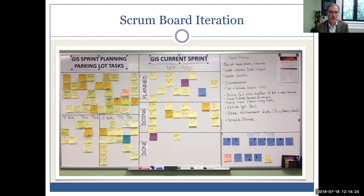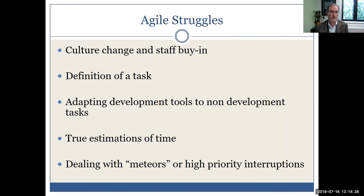We added a two- and four-week sprint planning section. When requests come in mid-sprint, we can tell customers: we're already scheduled out, but I can put you on the two- or four-week horizon depending on priority. We work with them to meet their needs while staying within our plan. Having the board up really helps with transparency among our group during daily standups, and customers can come in and see exactly where we are.